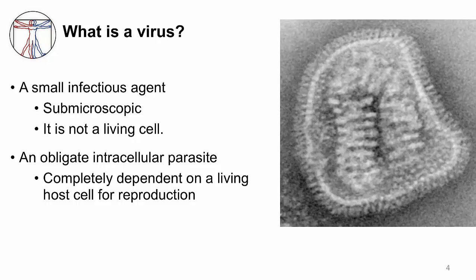In this picture of influenza virus, you can see its membrane and nucleic acid inside, but one of the key components the virus doesn't have are ribosomes, which the virus needs to complete replication. So it has to steal them and other things from somewhere else. This leads to a very important concept: a virus is an obligate intracellular parasite, meaning it is completely dependent on the living host cell for reproduction.